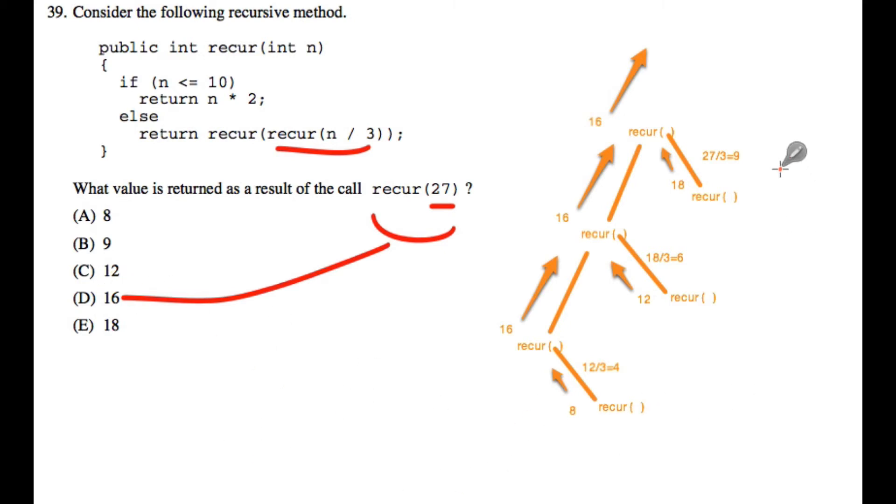Okay, so drawing these little trees can be helpful. This one is a little bit tricky, because you sort of have to have this subtree that goes off as you evaluate what the parameter is for the recursive call.